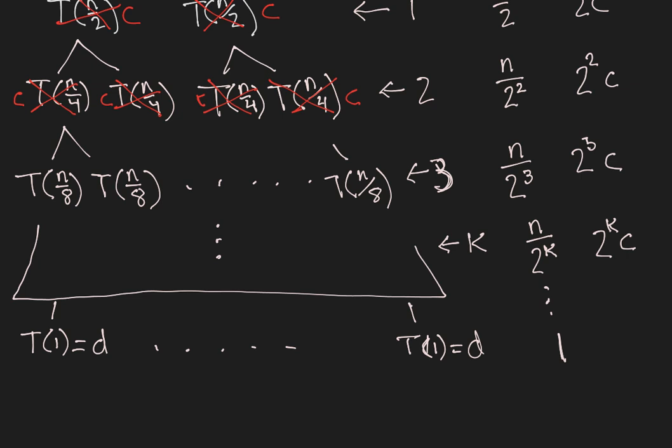And we can figure this out just by setting n over 2 to the k equal to 1, which means 2 to the k is equal to n, or k is equal to log of n.